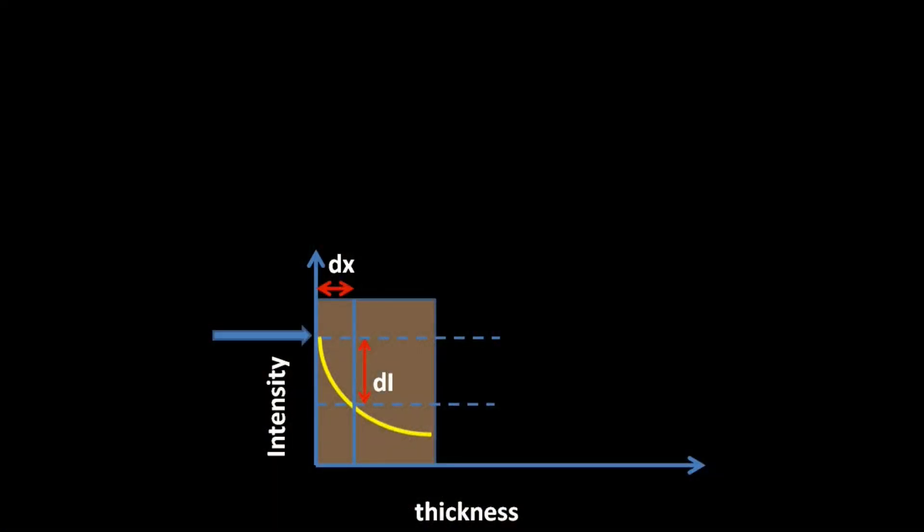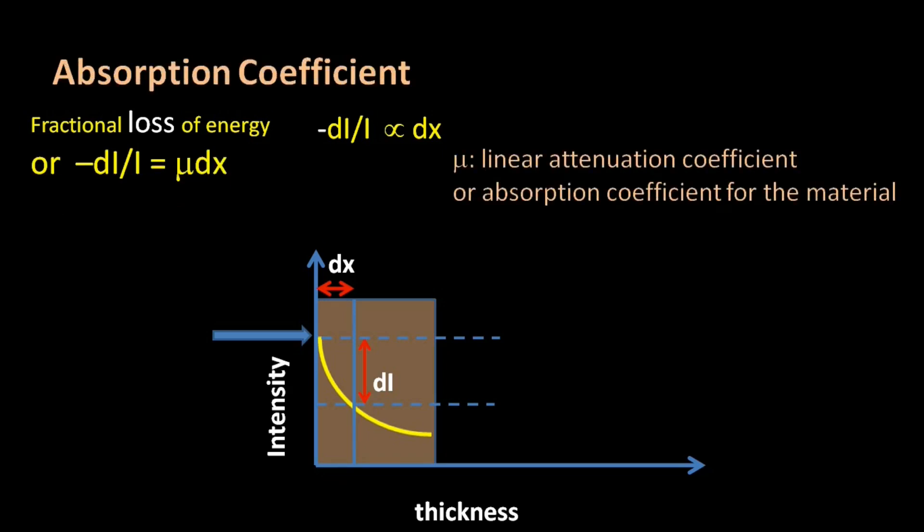Then the fractional loss of energy, that is -dI/I, is directly proportional to this thickness dx of the absorbing material. It can be written as some constant multiplied by dx. Now this constant is nothing but μ, which is the linear attenuation coefficient or the absorption coefficient for the material or the absorber. On integrating, we get I₀ as the intensity at x equals zero, and I is the intensity of the beam at thickness equal to x.